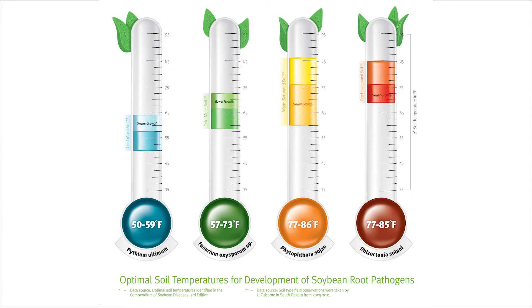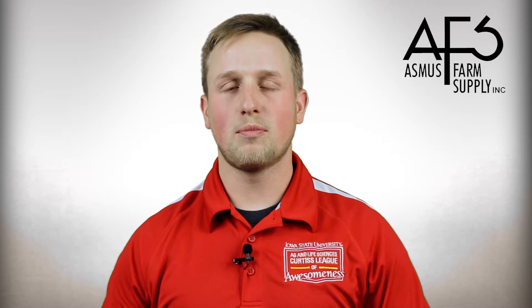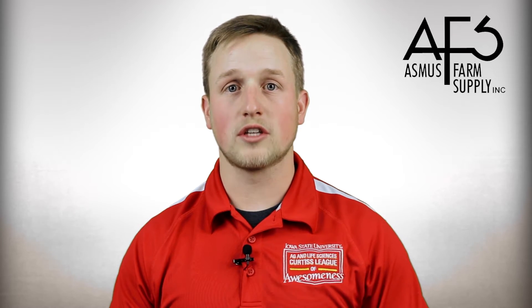The four main diseases that impact soybean yield all thrive in different environmental conditions. In cooler soil temperatures lower than 73 degrees Fahrenheit, Fusarium and Pythium are normally present in cold, moist soils. As soil temperatures start to warm up but remain saturated, you start to see Phytophthora's effects. In the drier, unsaturated soils, you start to see Rhizoctonia. The point is that there's always going to be a disease present in your fields.